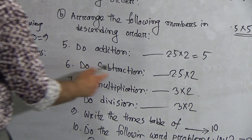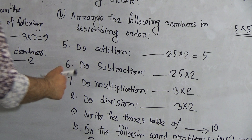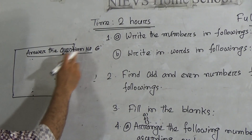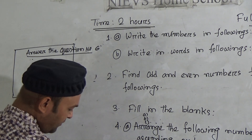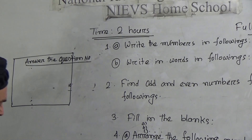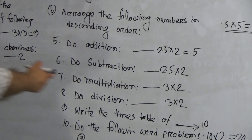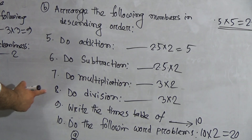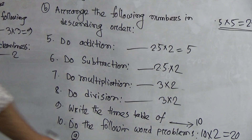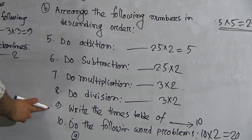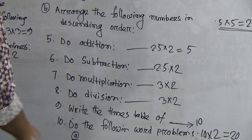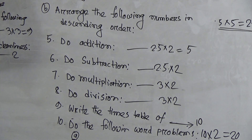Then do subtraction — that is question number six. Similarly, write the answer to question number six. Question number seven involves multiplication, and question number eight involves division. You will write the answers for these in a similar way.